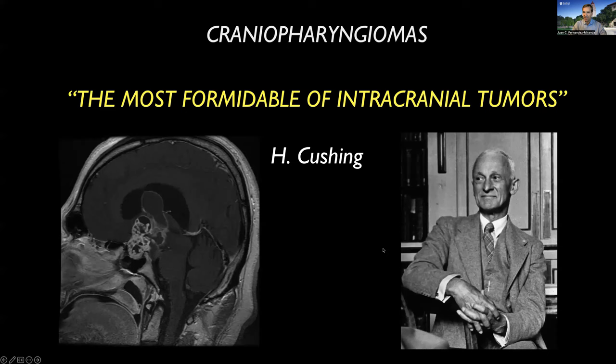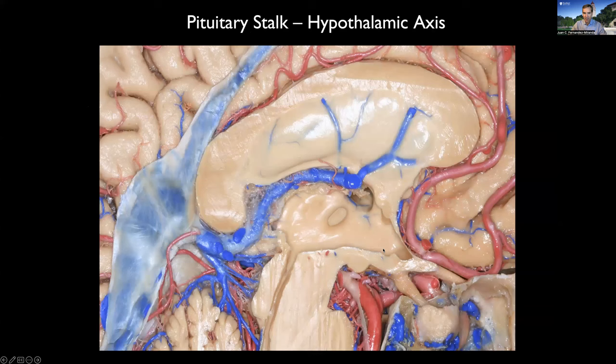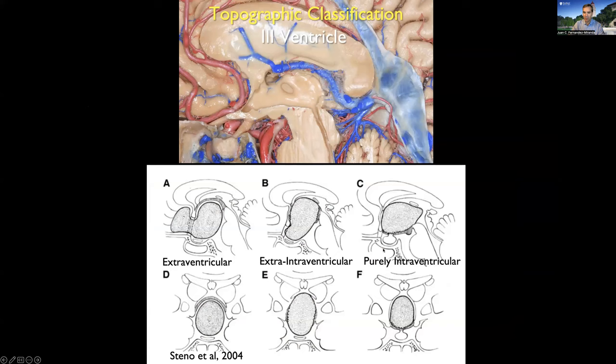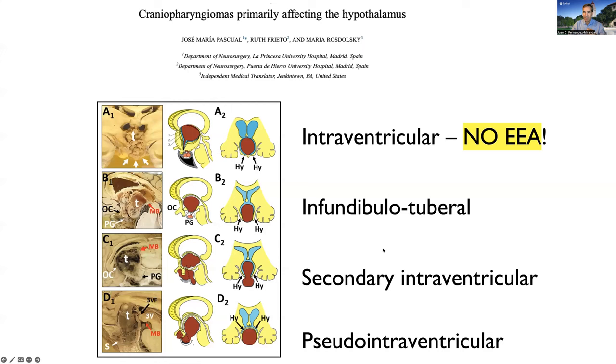Craniopharyngiomas are considered one of the most challenging intracranial tumors, as Cousin stated, and they are truly challenging because of their location along the pituitary stalk and hypothalamic axis. These tumors have been classified in multiple ways. One of the simplest classifications by Asteno takes into consideration the relation to the third ventricle. I'm going to focus particularly on craniopharyngiomas that affect the hypothalamus, because those are the most challenging ones.